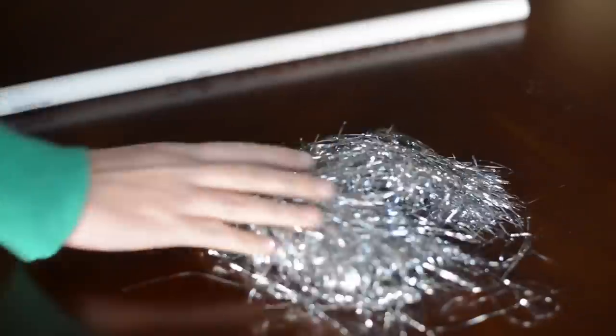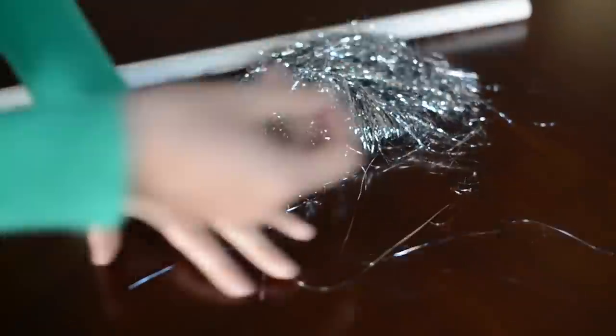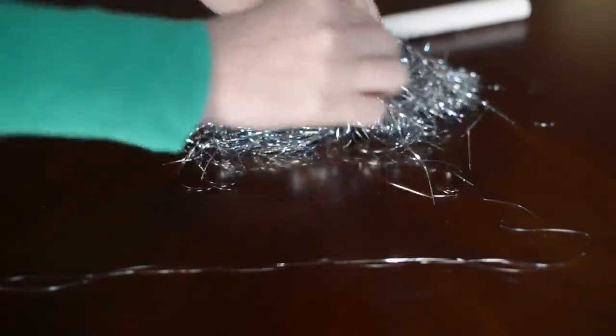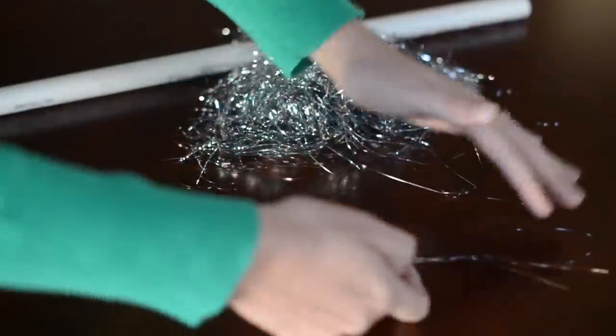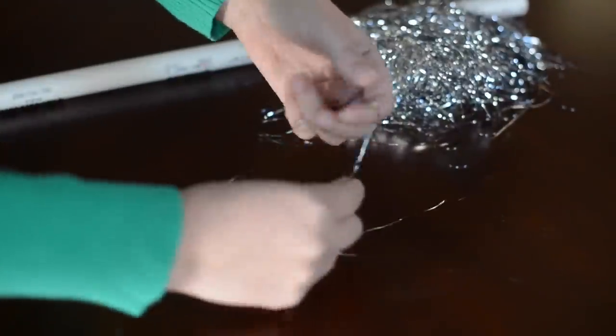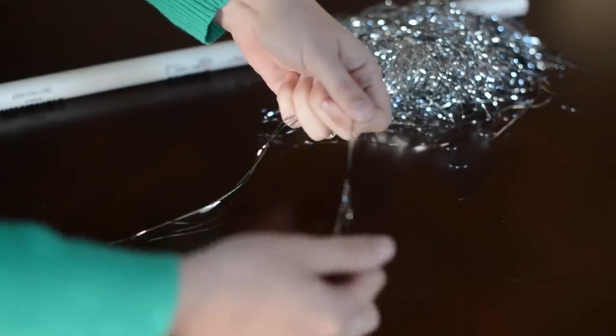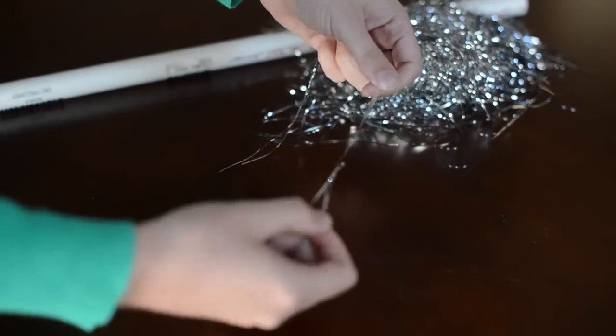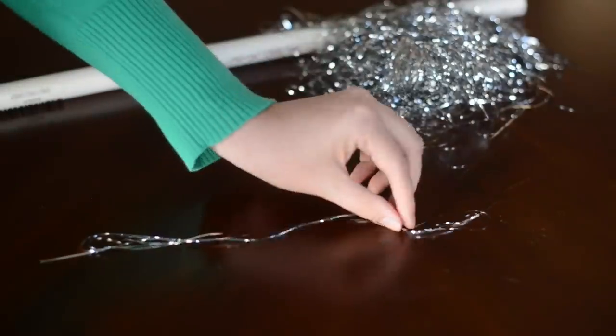All you need for this is a piece of PVC pipe and some Christmas tinsel. Take three to six strands of tinsel and tie them together on each end about six inches apart. And then you cut off the excess on the end.